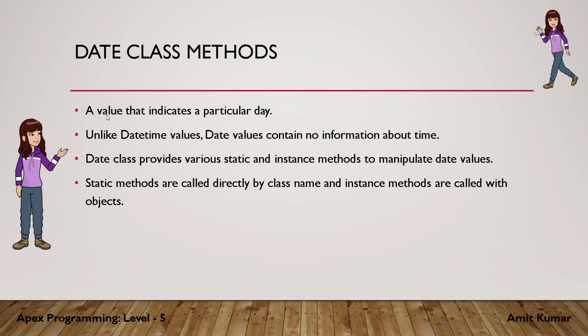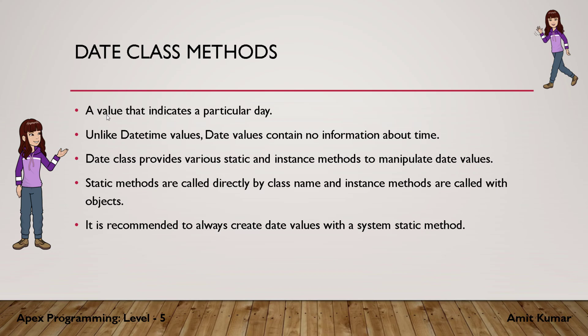Static methods are those methods which are called directly by the class name, for which we need not create any instance or object of the class. But instance methods are those methods which are called with objects. So to call an instance method you need to create a Date instance or an object of Date class, but to call any static method you can directly call it with the name of the class itself.